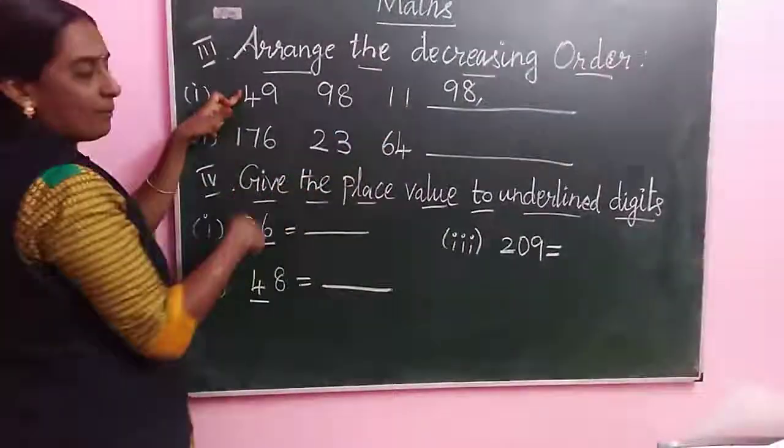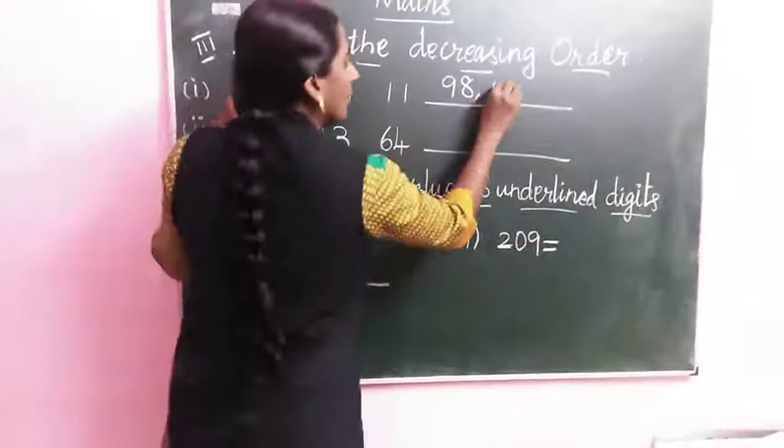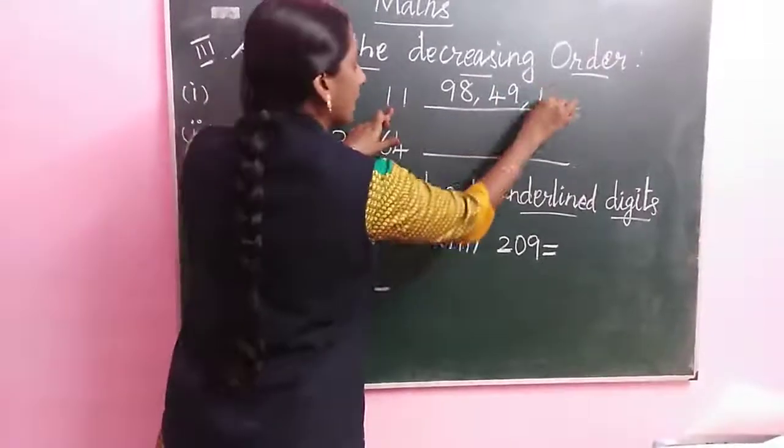Next, take the other two numbers: 49, 11. Which is the big number? 49. Next, last one remaining is 11.